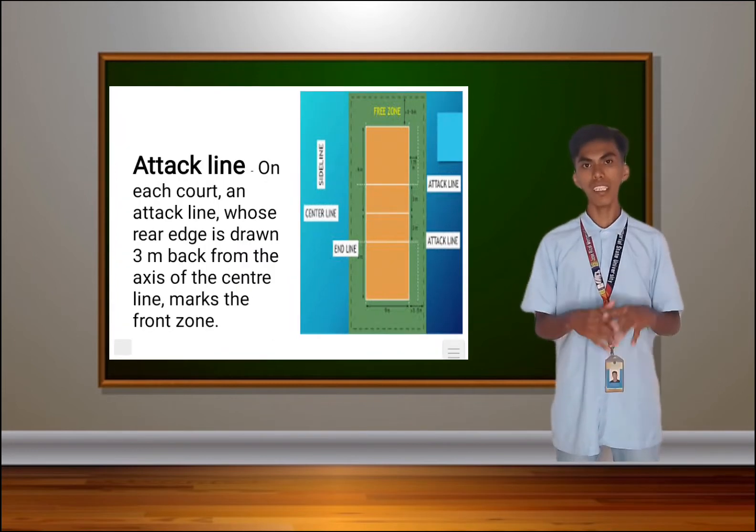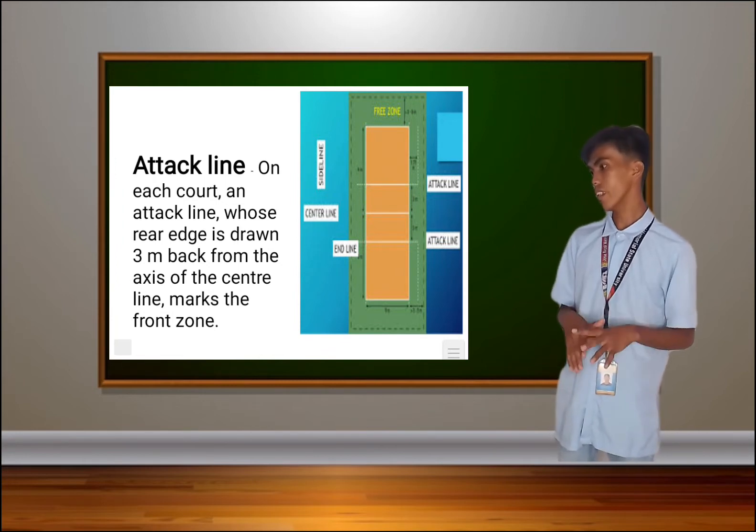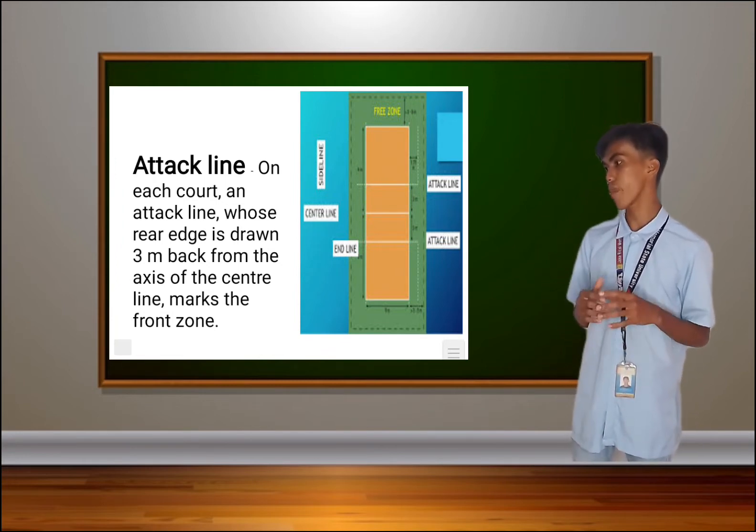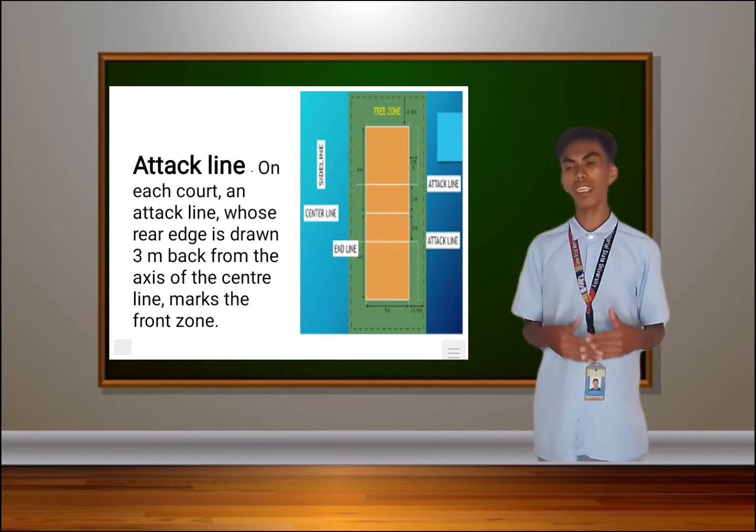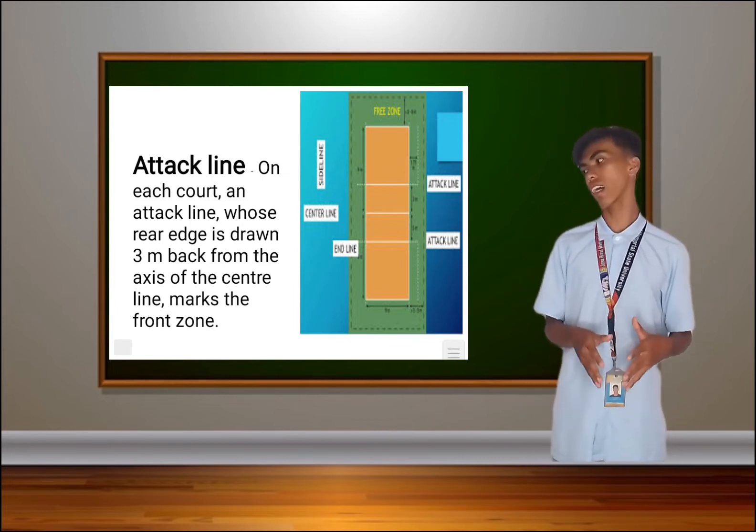The last line is the attack line. On each court, an attack line whose rear edge is drawn 3 meters back from the axis of the center line marks the front zone.